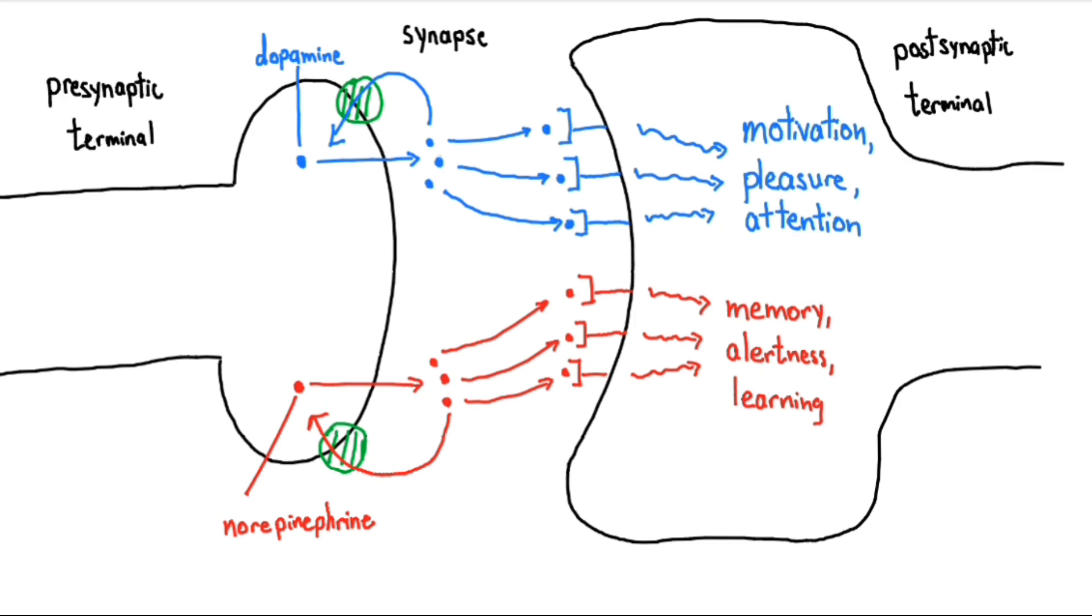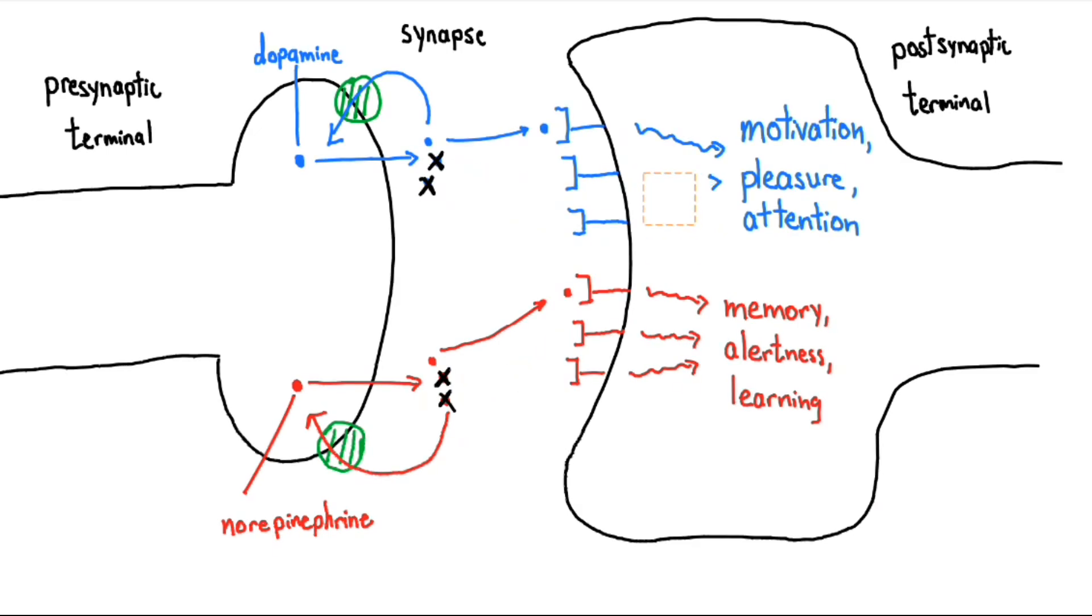In ADHD, lower levels of dopamine and norepinephrine are thought to result in inattention, hyperactivity, and impulsivity.